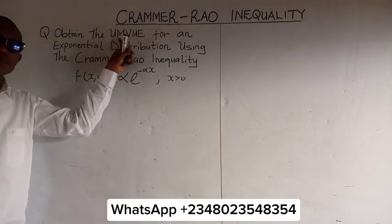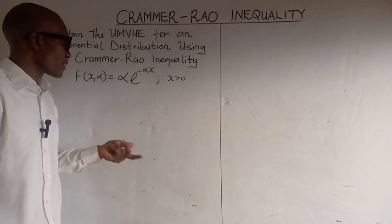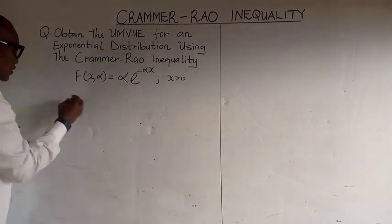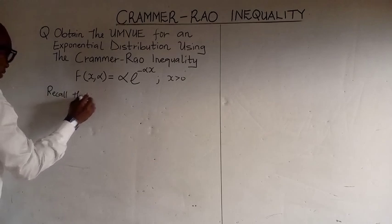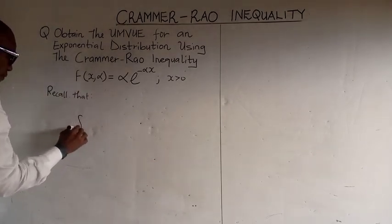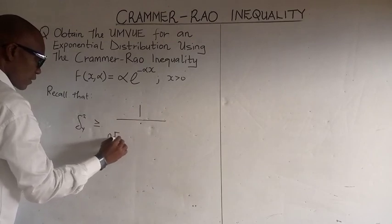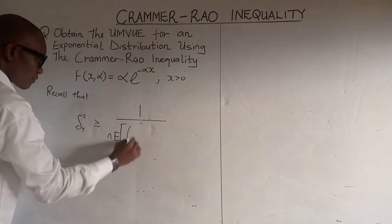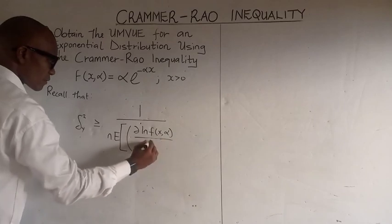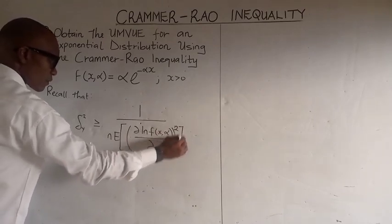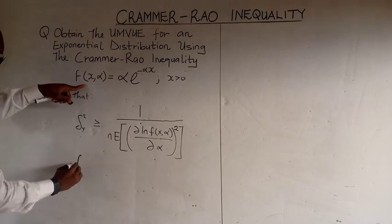Obtain the minimum unbiased estimator for an exponential distribution using the Cramér-Rao inequality. We recall that the Cramér-Rao inequality is given by 1 over n times the expectation of the differential, in this case we have alpha. So this is the Cramér-Rao inequality and this is the function given.